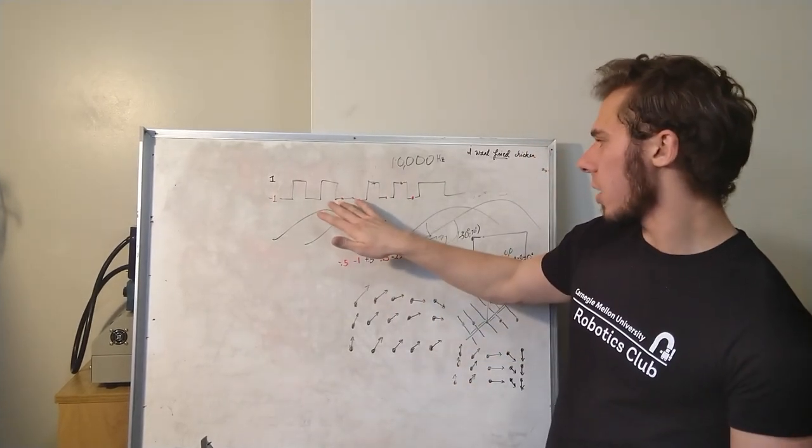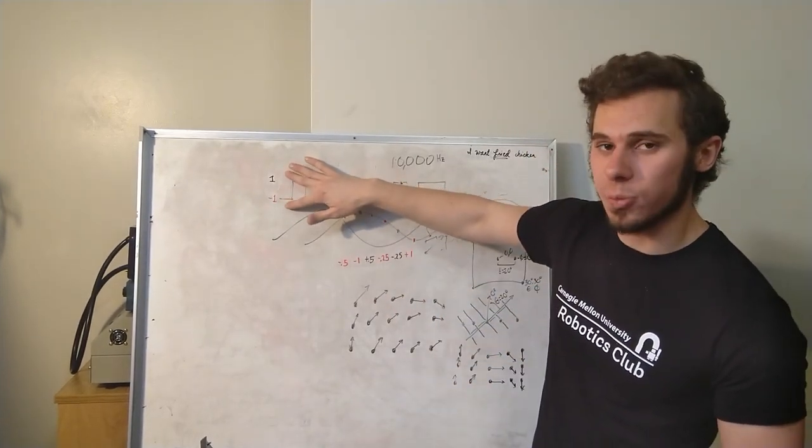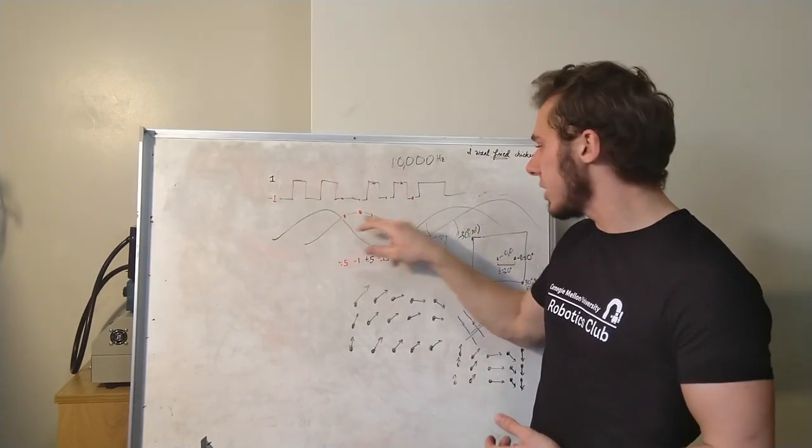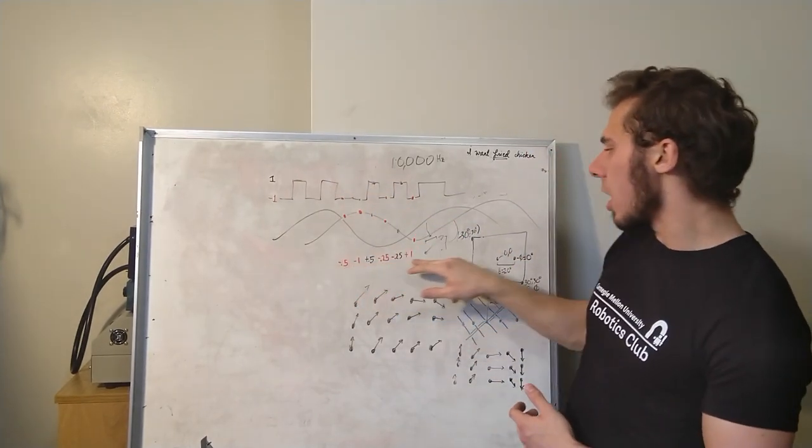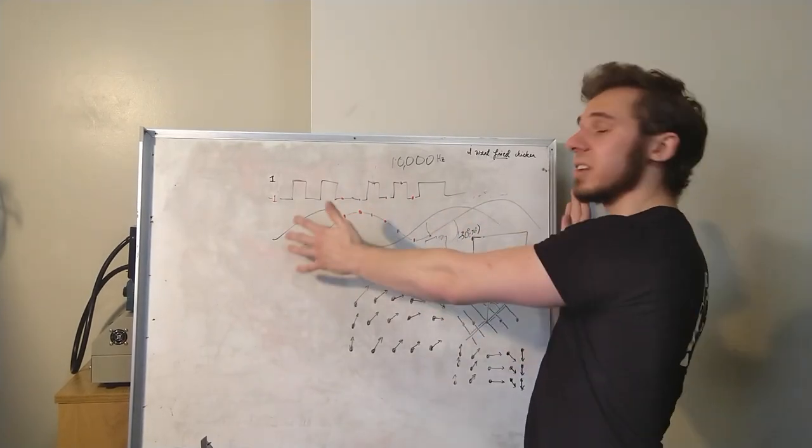So we take our data signal represented as plus and minus 1 instead of 1 and 0, and then multiply it by each wave individually, and then sum up each of those values across the entire wave.